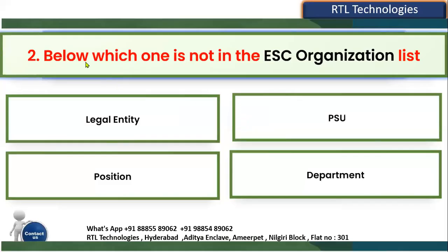The second question: in the below options, which one is NOT in the ESC organization list? ESC stands for Enterprise Structure Configurator — it's a group of organizations. When implementing Human Capital Management for a client, you define these organizations. The options are: Legal Entity, PSU, Department, or Position.